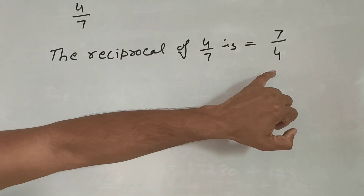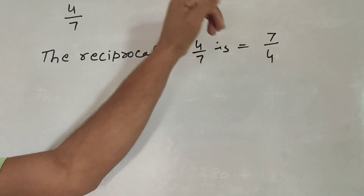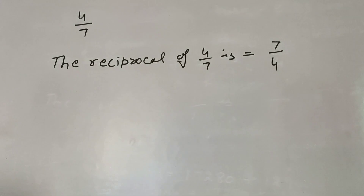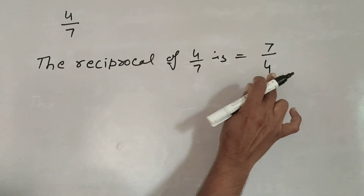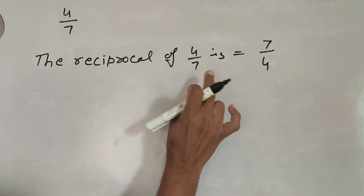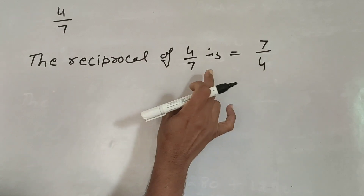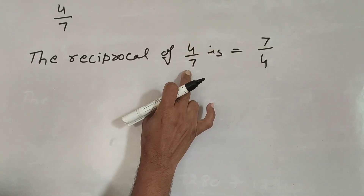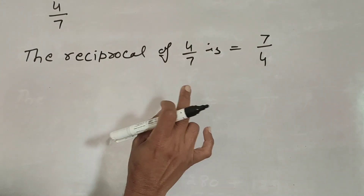So, we find the reciprocal or multiplicative inverse. 7 by 4 is the reciprocal of 4 by 7. And 7 by 4 is the multiplicative inverse of 4 by 7.